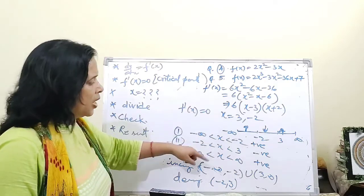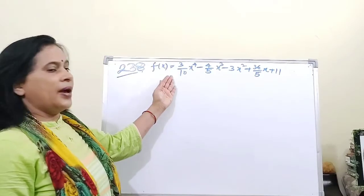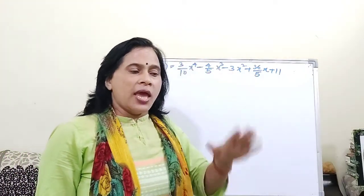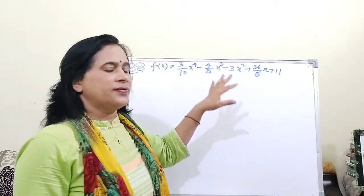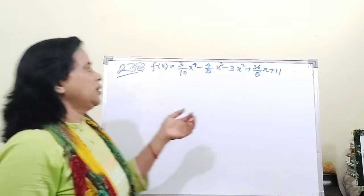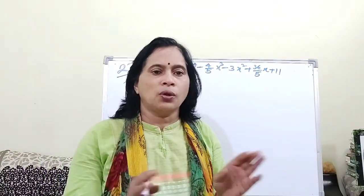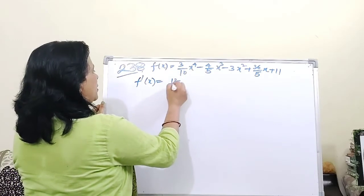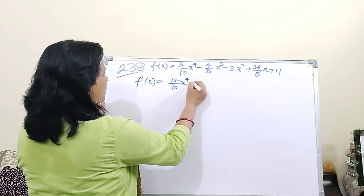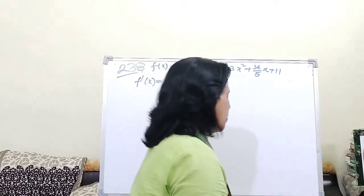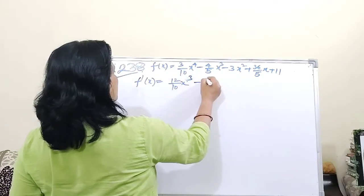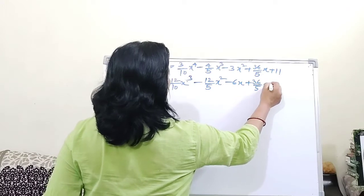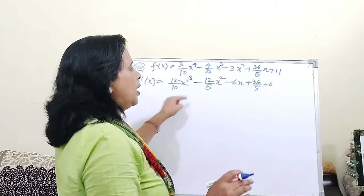Now I have a question from the 2019 board exam worth four marks — very important from this chapter. I have already written the steps. f'(x) = (12/10)x⁴ ... which simplifies to (3/10)x³, then minus (12/5)x², minus 6x, plus 36/5.